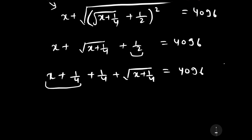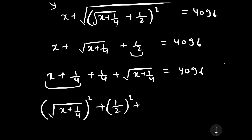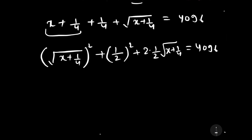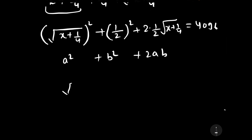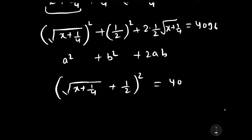Now x plus 1 by 4 can be written as under root x plus 1 by 2, whole square, plus 2 into 1 by 2 into under root x plus 1 by 4, equal to 4096. Once again it is in the form of a squared plus b squared plus 2ab. Therefore this term can be written as under root x plus 1 by 4 plus 1 by 2, whole square, equal to 4096.